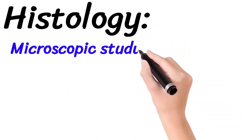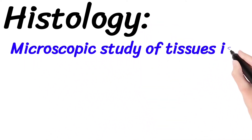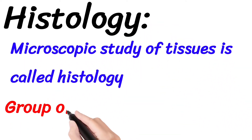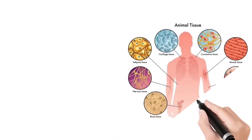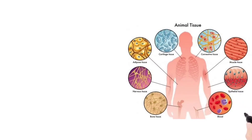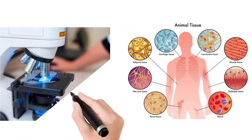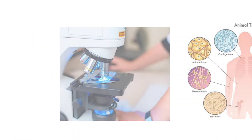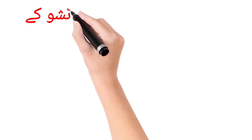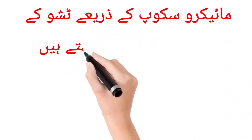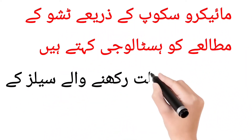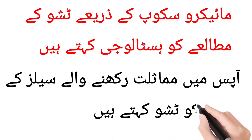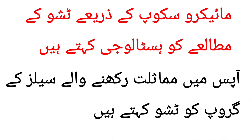Histology. Microscopic study of tissues is called histology. Group of cells is called tissues. For example, if we study animal tissues with the help of a microscope, it is said to be histology. Microscope ke zariye tissues ki mutalia ko histology kehte hain. Aapas mein mumashrat rakhne wale cells tissues kehlaate hain.